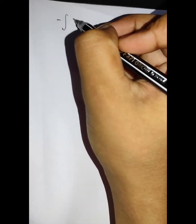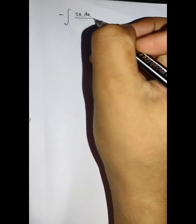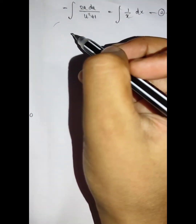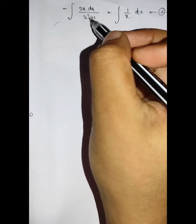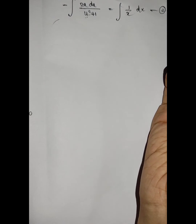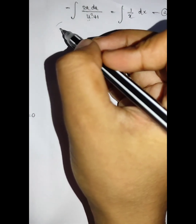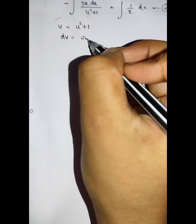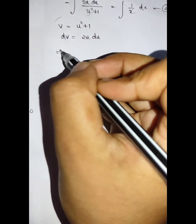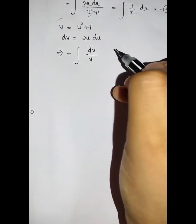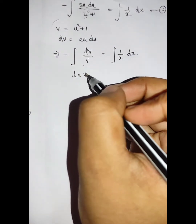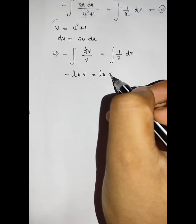We integrate: integral of 2u over minus u squared plus 1 du equals integral of 1/x dx. Using the substitution v equal to minus u squared plus 1, so dv equals minus 2u du, we get minus log v equal to log x plus constant, which gives minus log of minus u squared plus 1 equal to log x plus c.